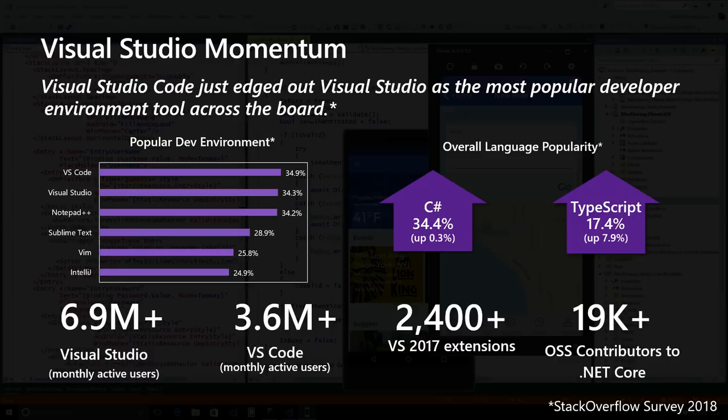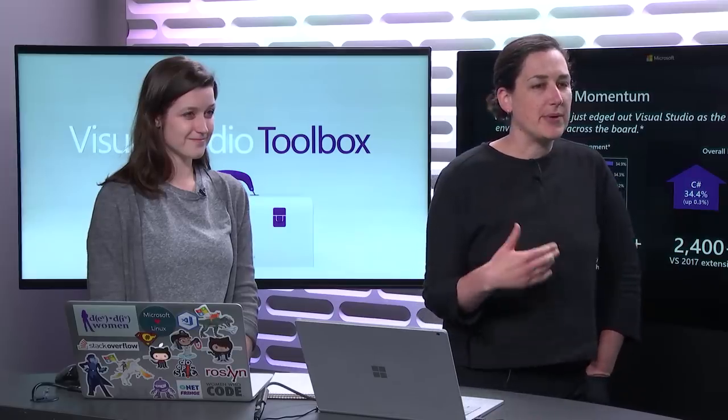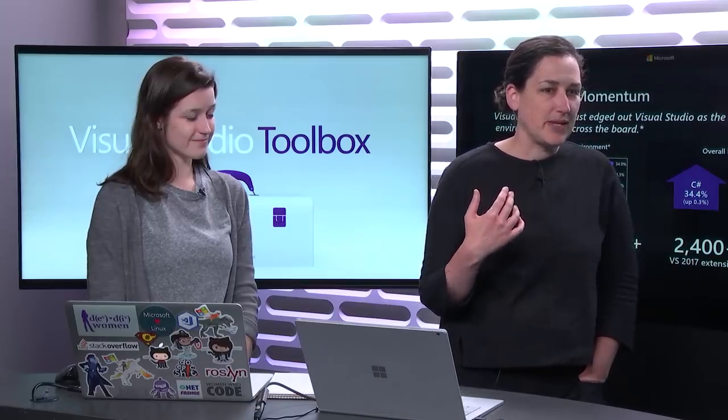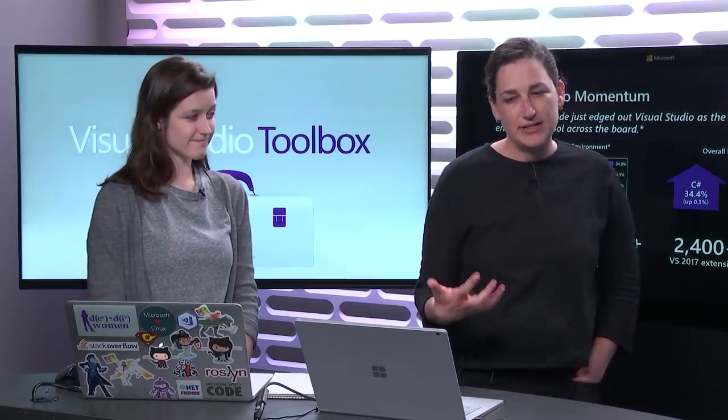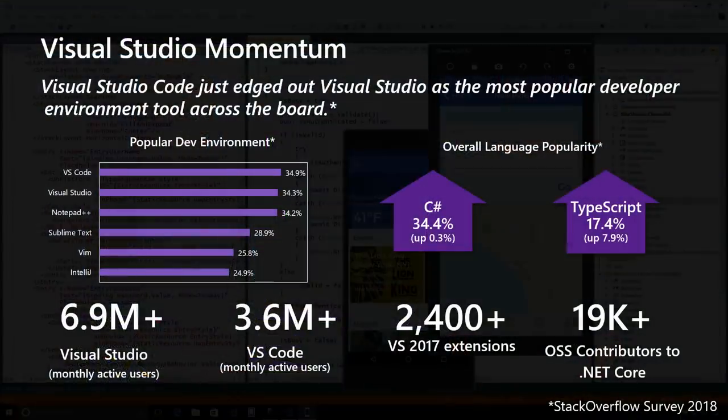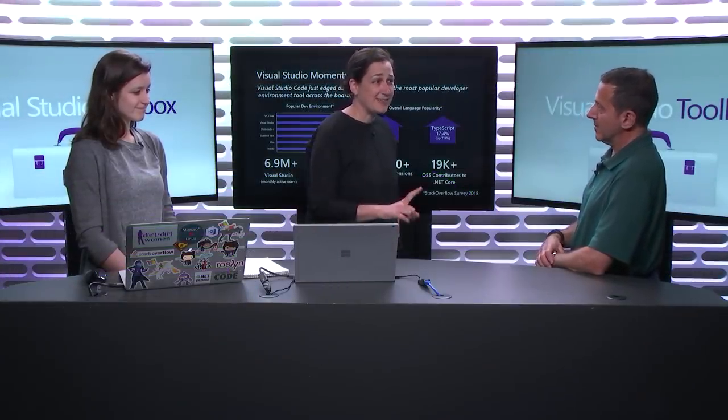For Visual Studio 2017, we now have 2,400 extensions. The community around Visual Studio 2017 is present and everybody is excited about it. The other thing that really makes the developer community productive is the community itself — for .NET Core, there are more than 19,000 contributors outside of Microsoft. Things are more likely to be open source than not these days.